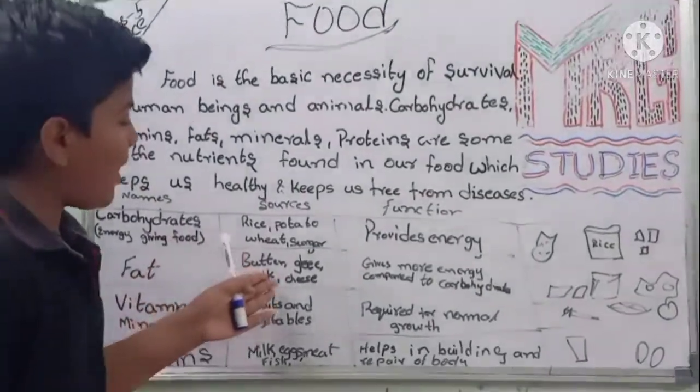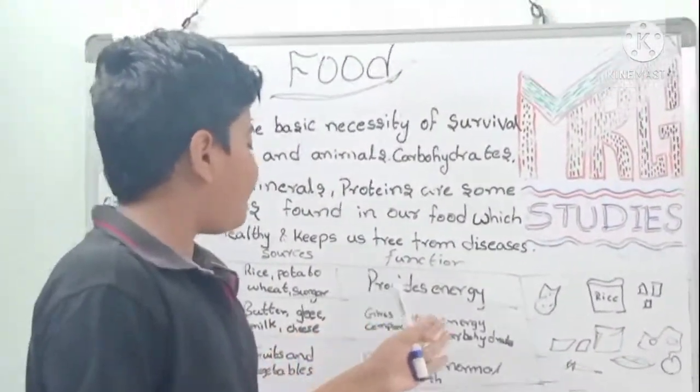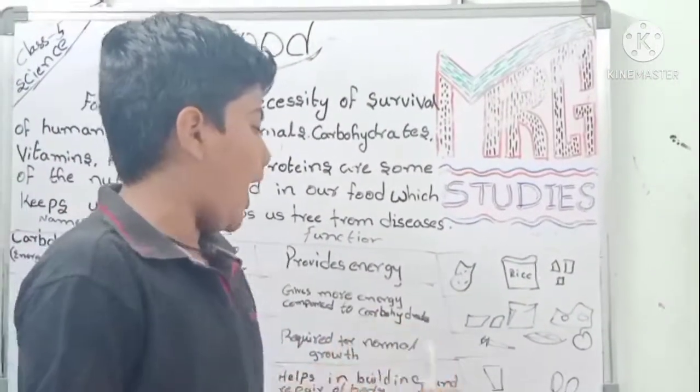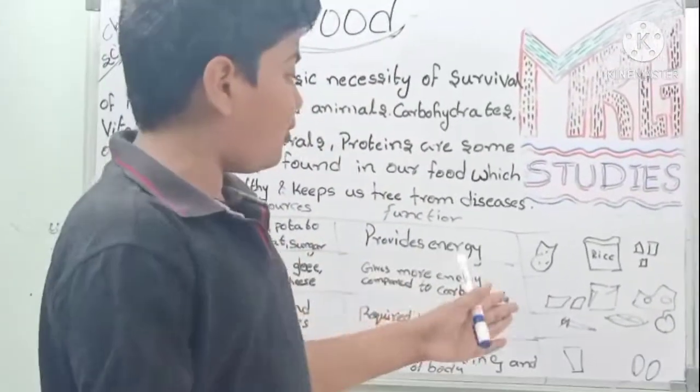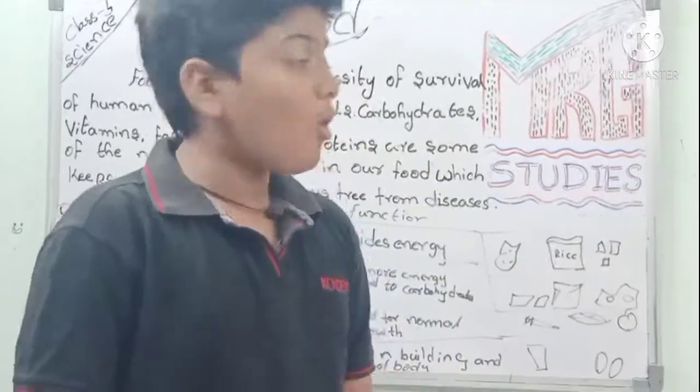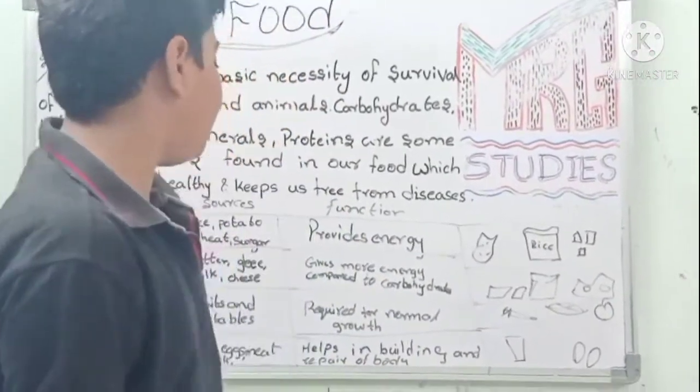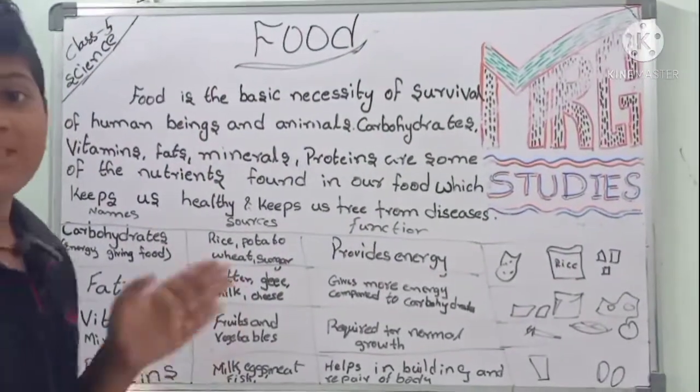Fats like butter, ghee, milk, and cheese give more energy compared to carbohydrates because fats give so much energy.